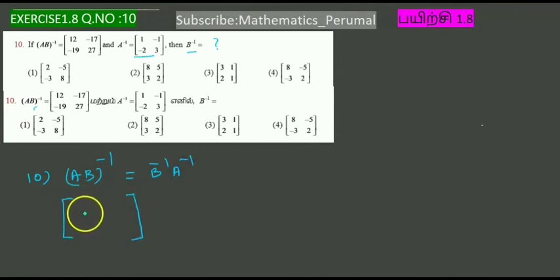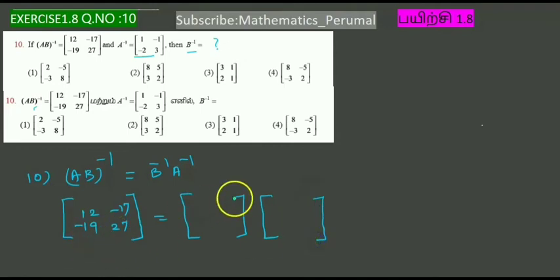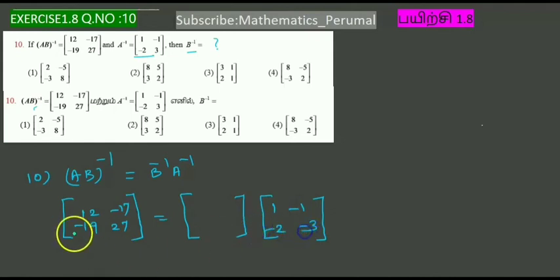The matrix values are 12, 17, 19, 27. We have the B matrix. Let's add to this and find the answer using the substitution method.